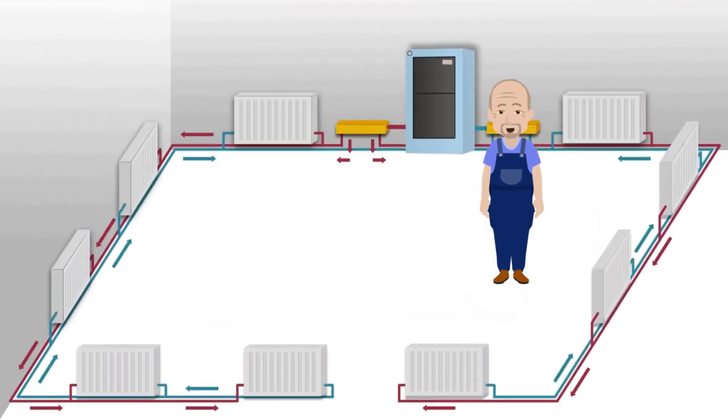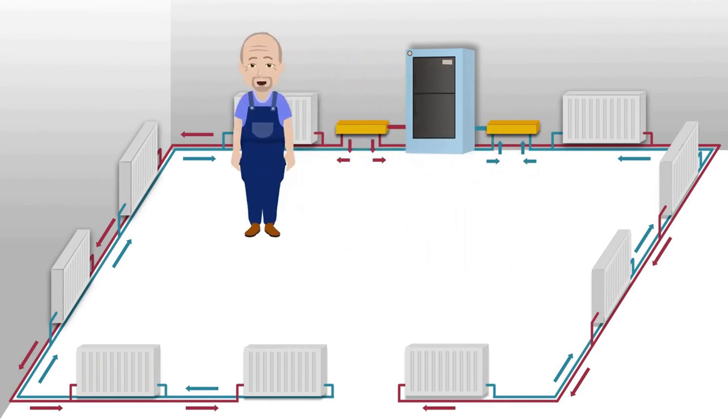The second connection option. Let's look at the second option for connecting these radiators in a two-pipe system. The supply comes out of the boiler and is connected to the distributor for two exits.